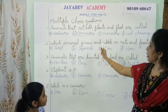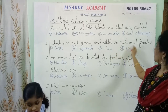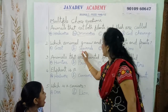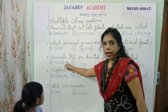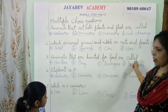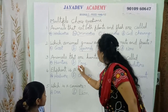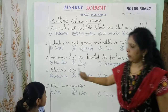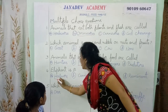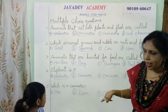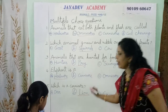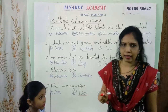Now once again let us review: animals that eat both plants and flesh are called omnivores. Animals that are hunted for food are called prey. Elephant is a herbivore. Which is a carnivore? Lion — it is a carnivore.